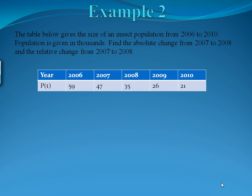Example 2. The table below gives the size of an insect population from 2006 to 2010. The population is given in thousands. So for example, in 2006 the population was 59,000 insects.